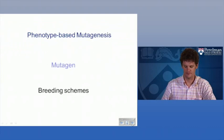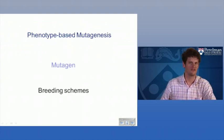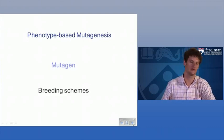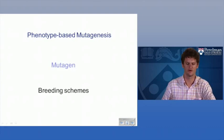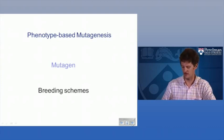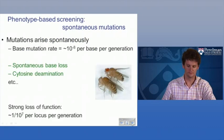To do a phenotype-based mutagenesis screen, you need a way to induce mutations into the genome so you have a population of animals you can screen for a particular phenotype. We'll talk about the breeding schemes used in animal systems for identifying mutants from screens.